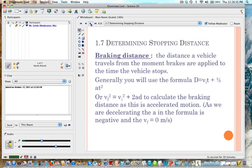Now braking distance is the distance a vehicle travels from the moment the brakes are applied to the time the vehicle stops. So the braking distance is going to happen after the reaction distance. Now generally you're going to be using the formula D equals V_i T plus 1/2 A T squared. Because acceleration is involved, well deceleration is involved in braking. Now you can sometimes also use the equation V_f squared equals V_i squared plus 2AD to calculate the braking distance as it also is an accelerated motion formula. So the A in either of these formulas is going to be represented by a negative number because the acceleration is opposite to the direction of travel.